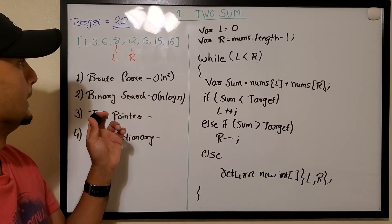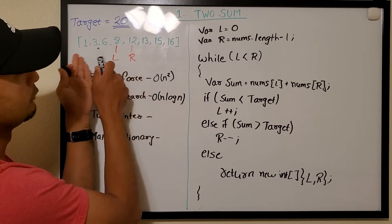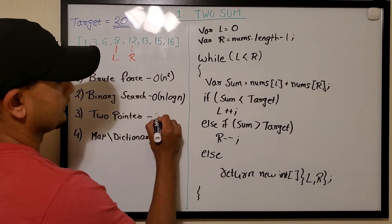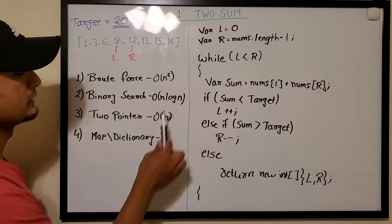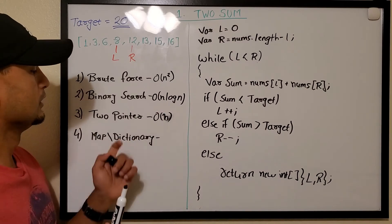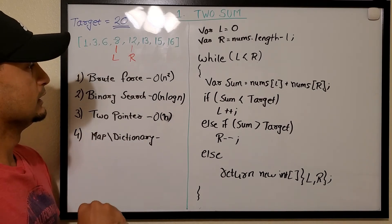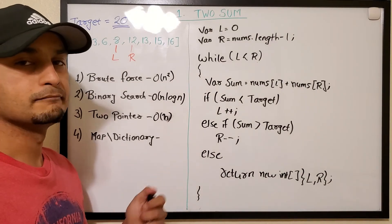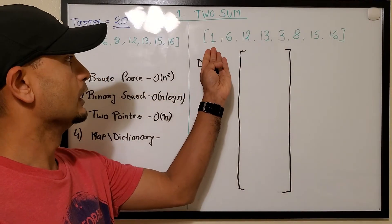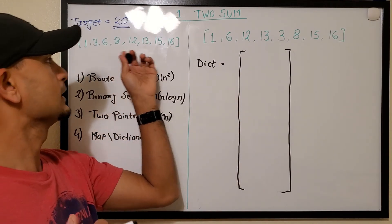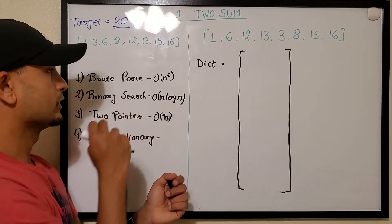Since we move linearly — l increments about 4 times and r decrements about 4 times — the time complexity is O(n), which is better than both brute force and binary search. However, both binary search and two pointer require the array to be sorted. So if the array is unsorted, we need a different approach.